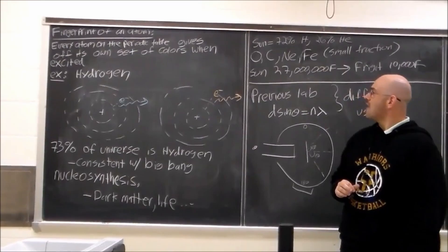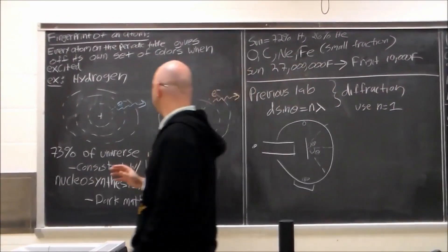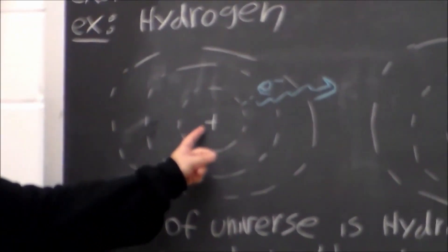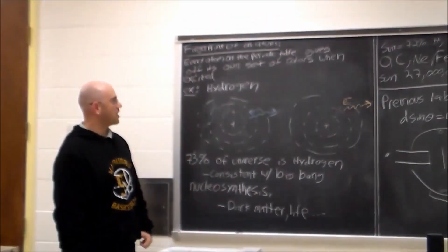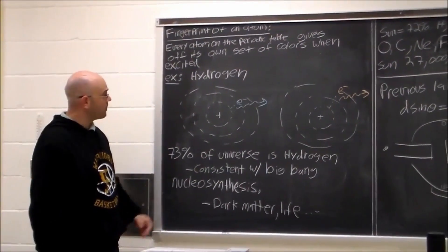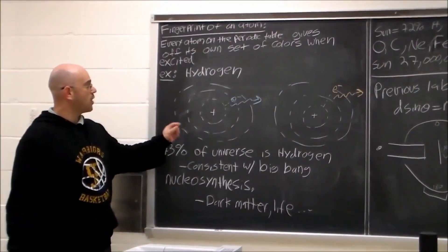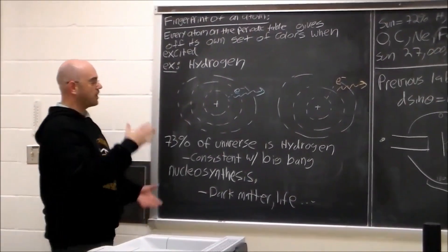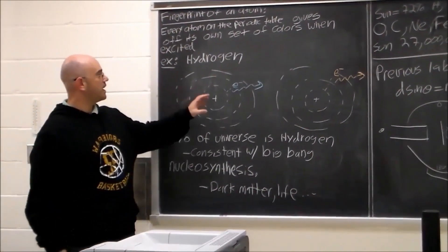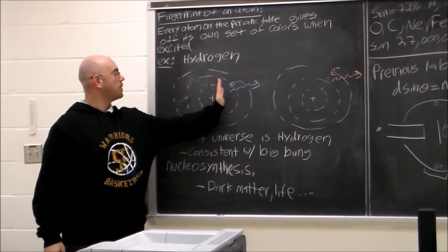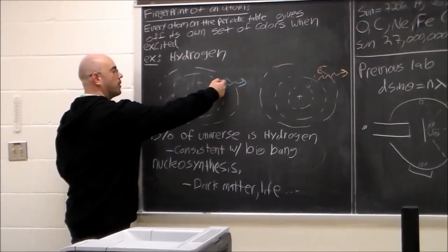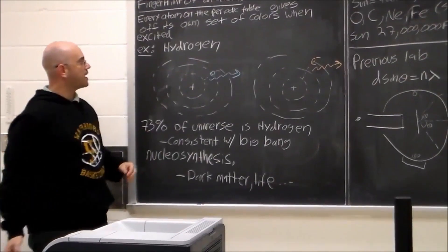For example, hydrogen. Here's a hydrogen atom and it has one proton in the center and an electron cloud outside. So if you have a gas of hydrogen and you heat it up, the electron, which is normally in the lowest orbital, these are called orbitals, will jump to a higher orbital and then at some point it will fall back down and it will give off a certain light.